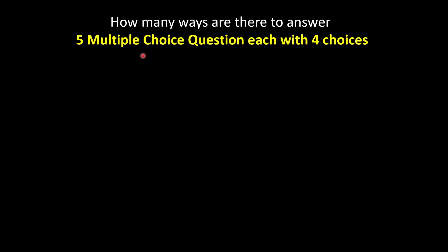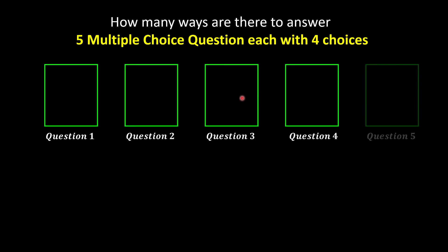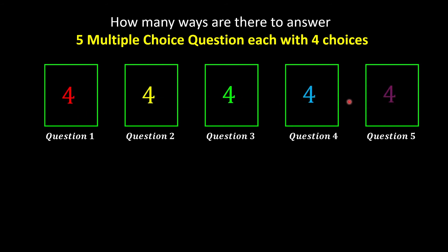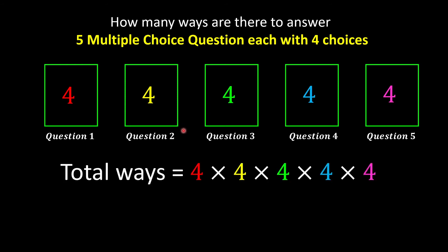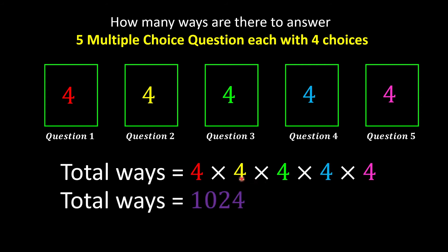Now consider five multiple choice questions where each question has four choices — A, B, C, or D — so four ways to answer each question. Since all events must happen in sequence, we use the multiplication rule and multiply all the number of ways together: 4 × 4 × 4 × 4 × 4 = 1,024 ways to answer these five questions.